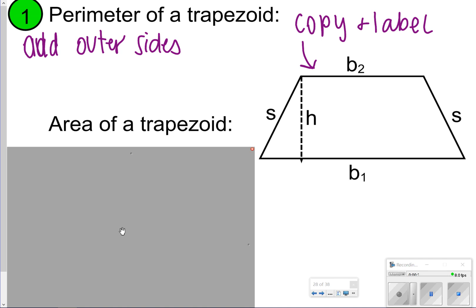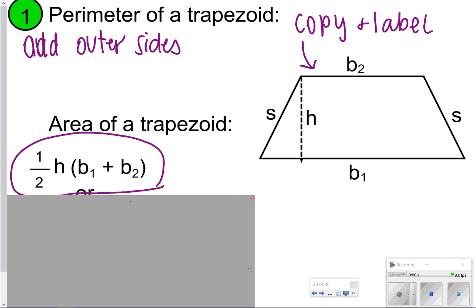For area of a trapezoid though, it's a little bit different. When you're trying to find the area of a trapezoid, this is the formula that's going to be given to you on your formula sheet: one half height parentheses B1 plus B2. That stands for half of the height times the bases added together. Bases are just going to be these parallel lines that you see, B1 and B2.